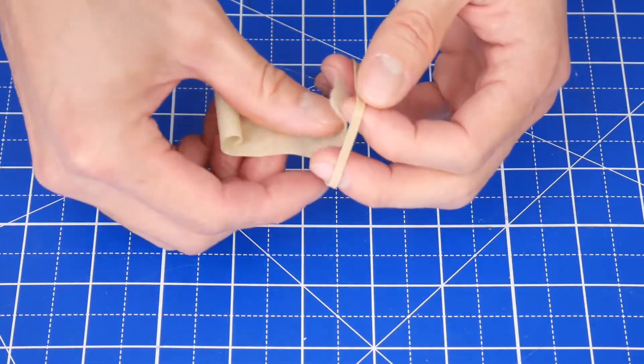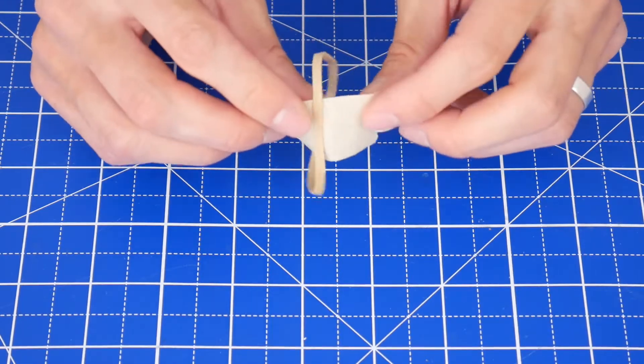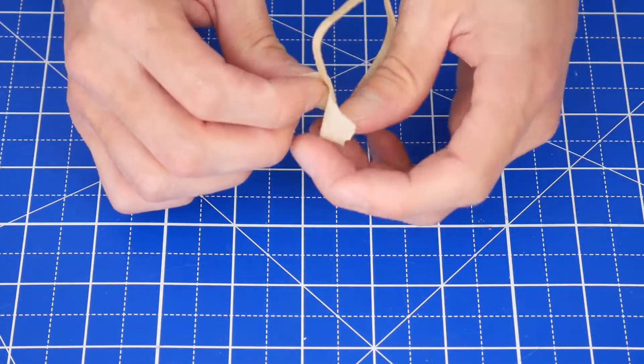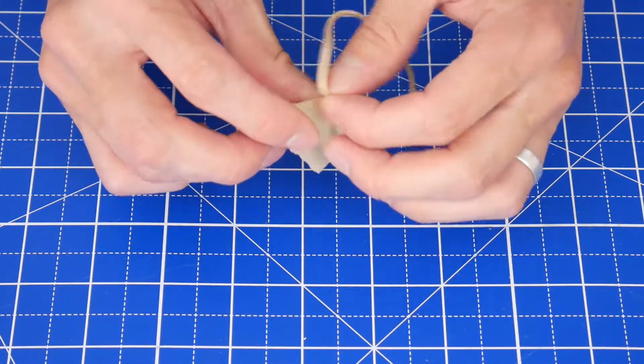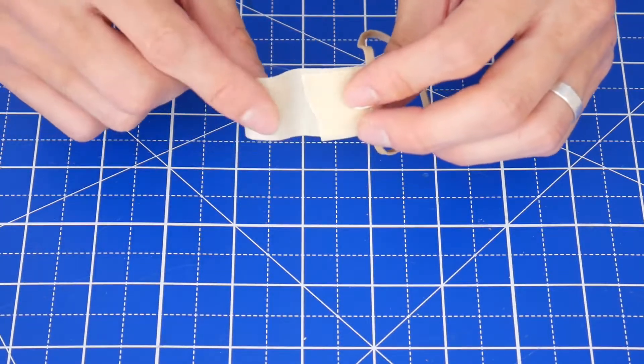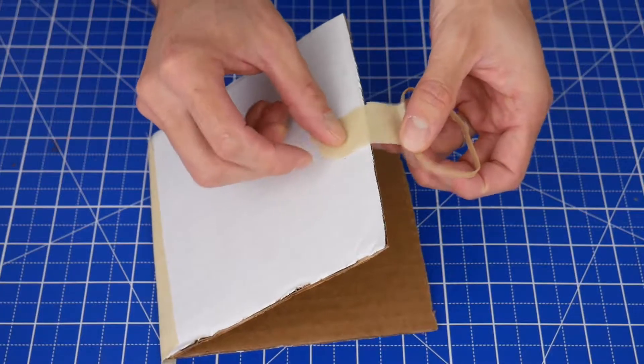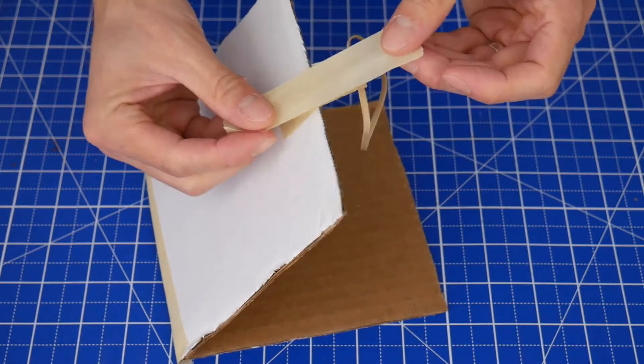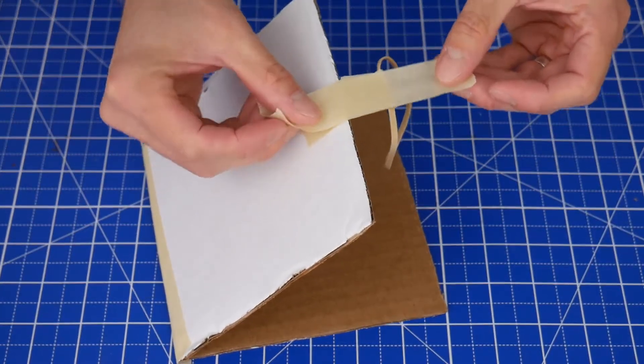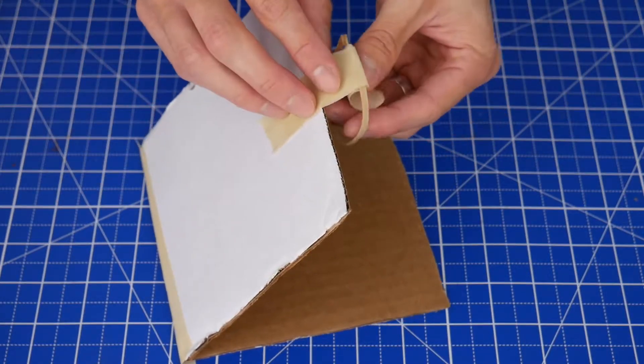Next, we'll attach the rubber bands by putting a piece of tape through a rubber band, folding the tape onto itself while making sure that there's a little bit of sticky part still hanging off the end. Tape that onto the edge of the cardboard like this. Then add one or two more layers of tape so that the rubber band doesn't tear through it.